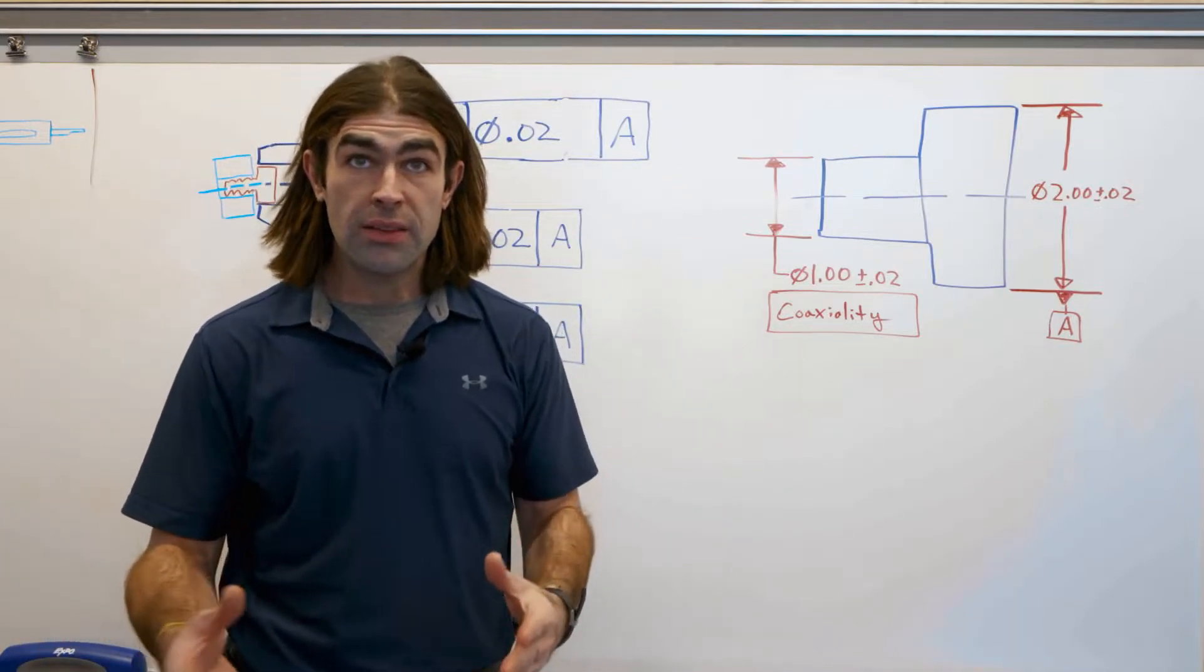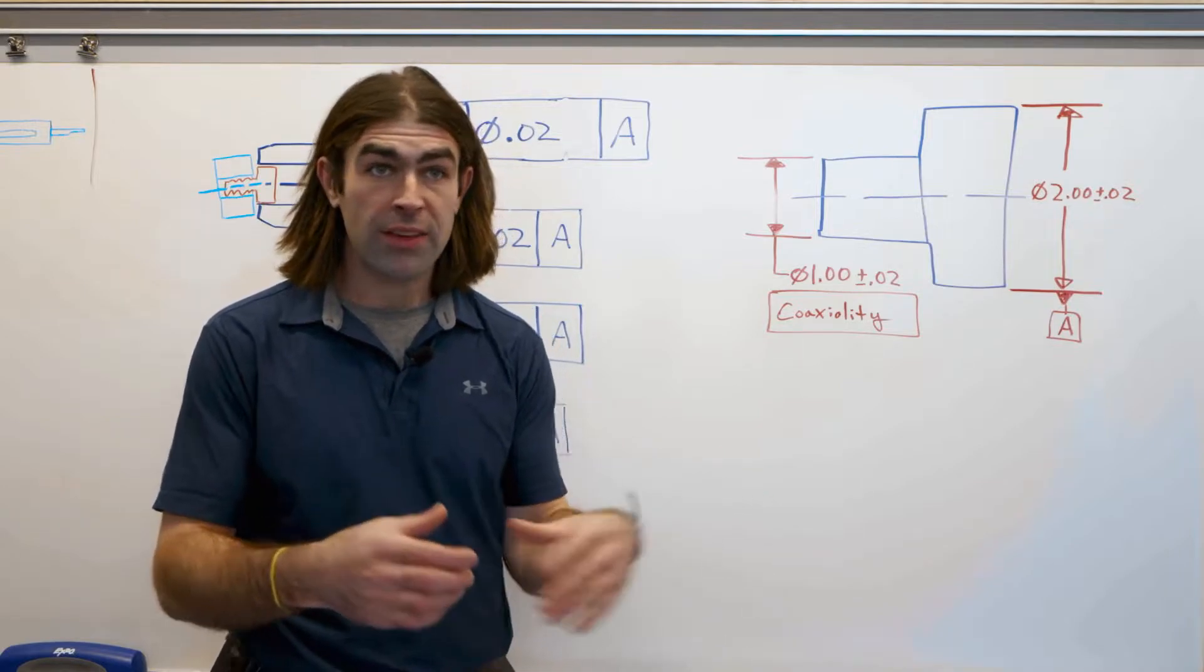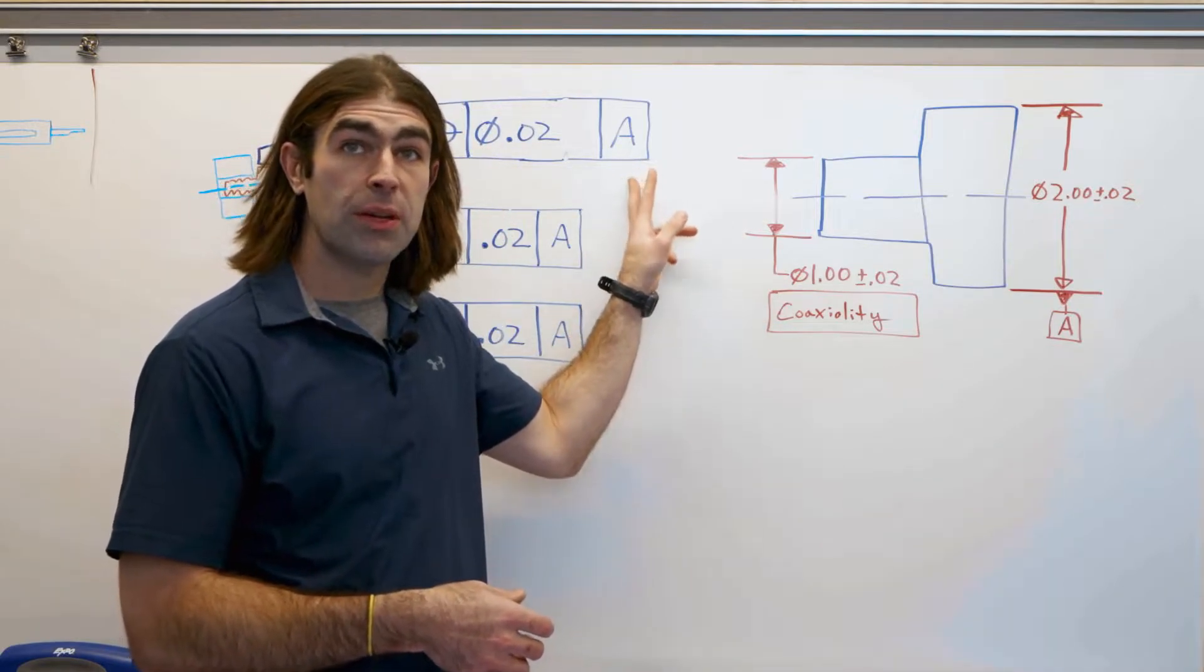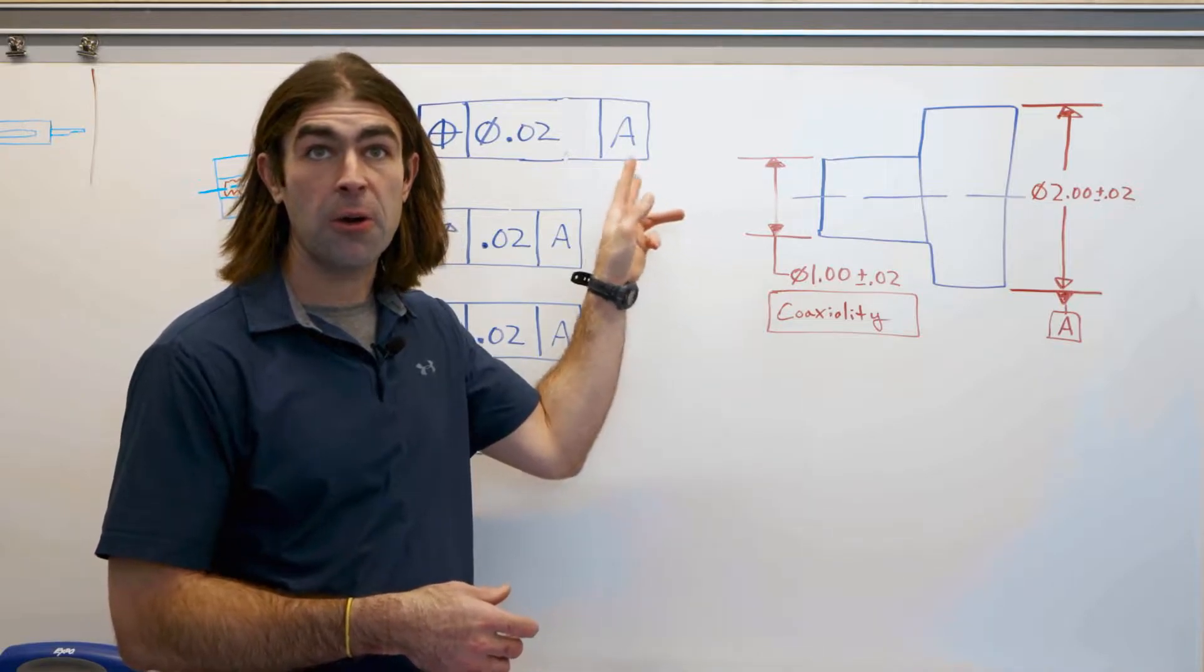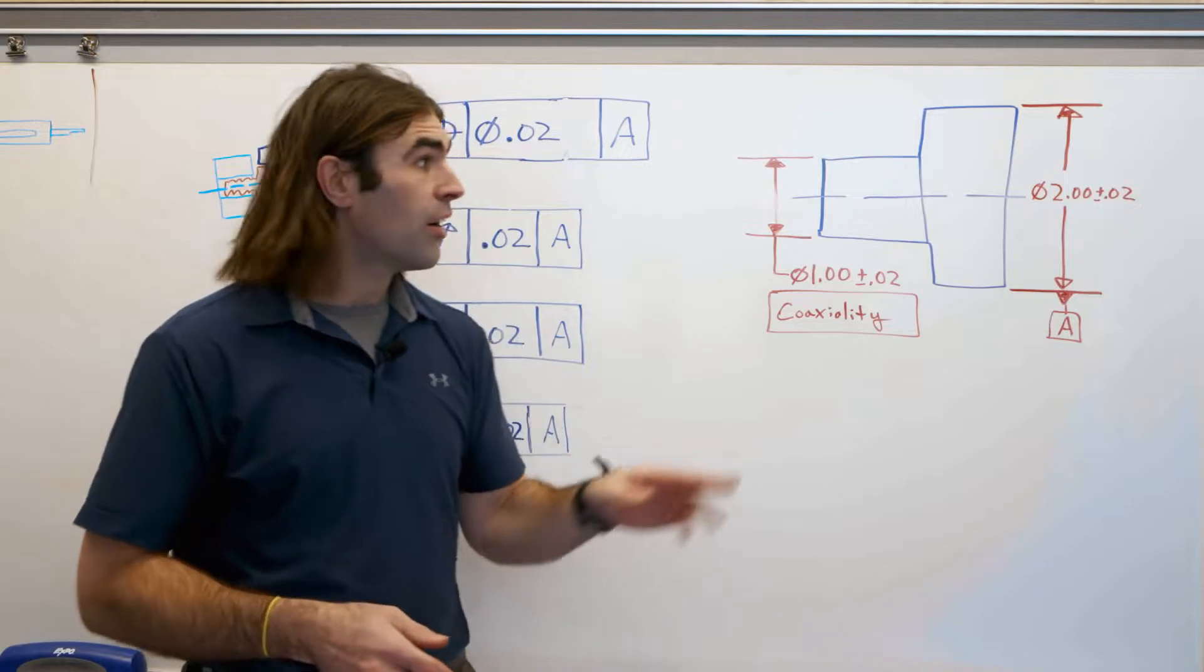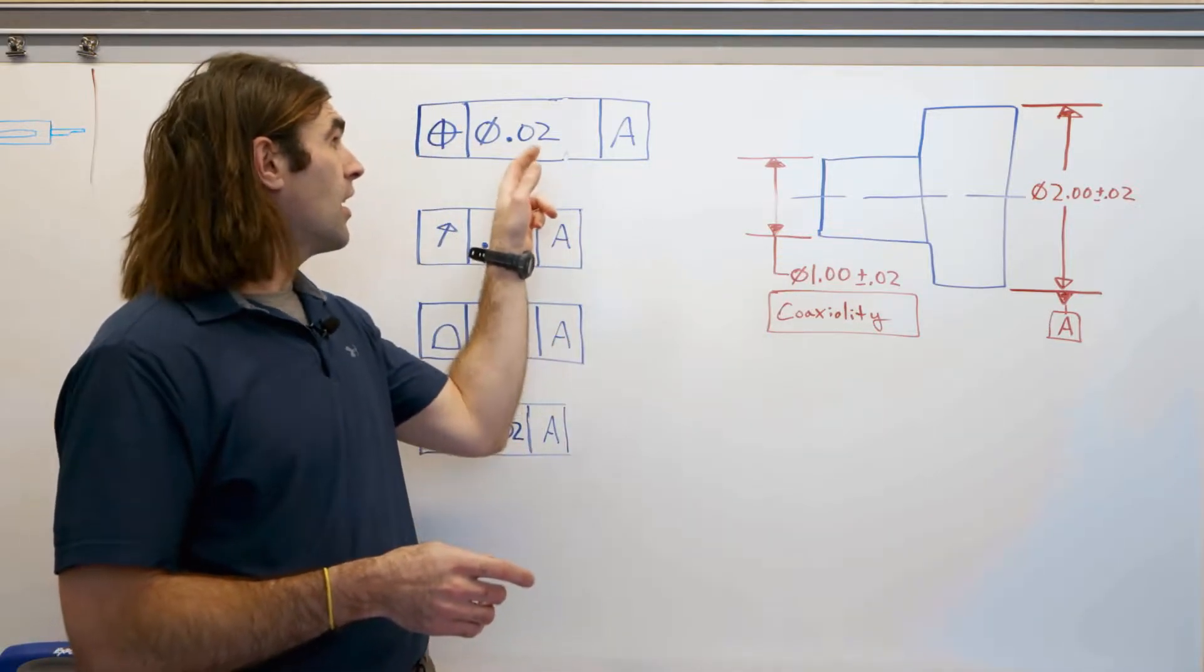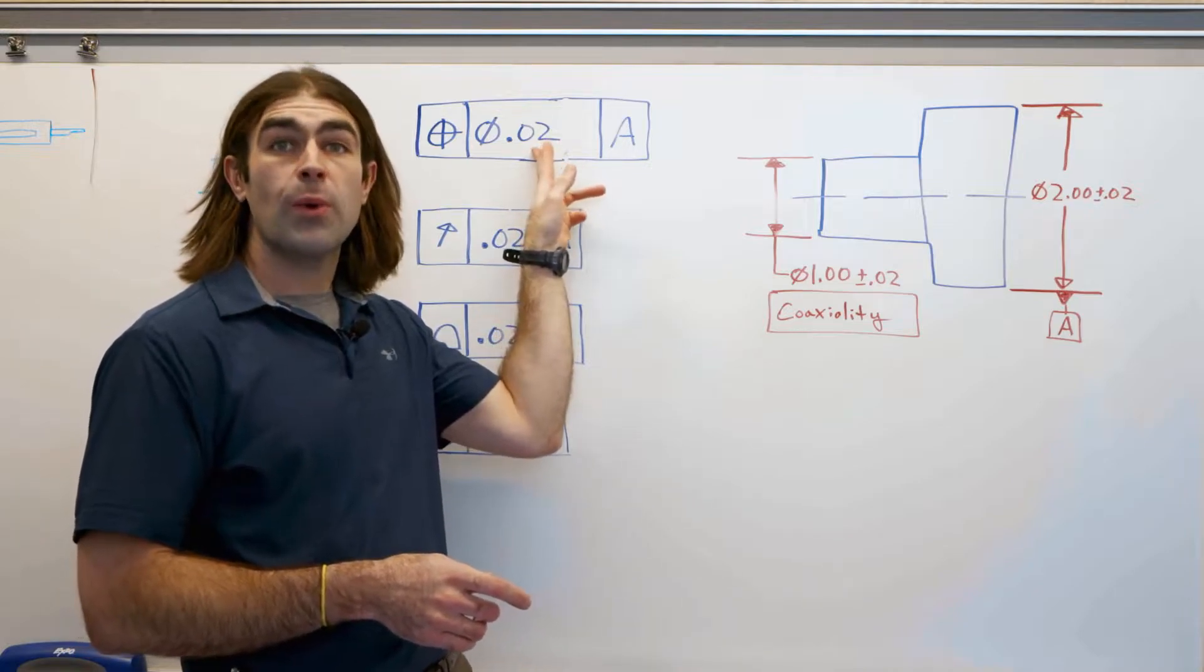Now what this means in practice when you inspect it, you're going to capture the datum axis at RFS because there's no material condition modifier here, and you're going to see if the axis of this one inch diameter is within a cylindrical tolerance zone of 20 thousandths.